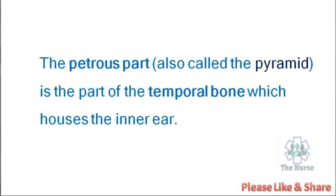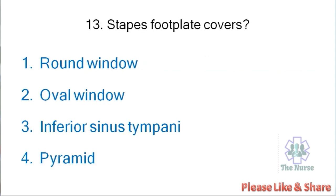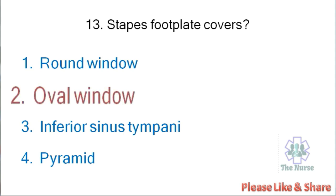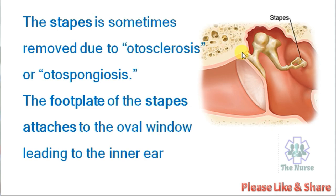The petrous part, also called pyramid, is the part of temporal bone which houses the inner ear. Next question: Stapes footplate covers — round window, oval window, inferior sinus tympani, or pyramid? Correct answer is oval window. The stapes is sometimes removed due to otosclerosis or otospongiosis. The footplate of the stapes attaches to the oval window, leading to the inner ear.